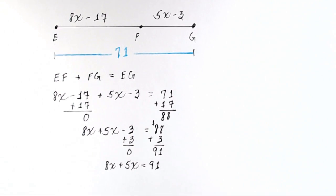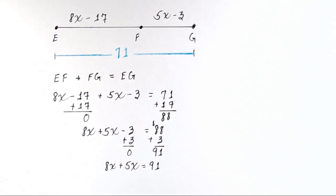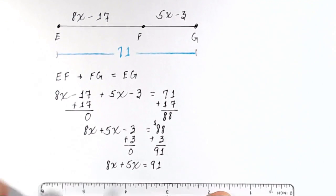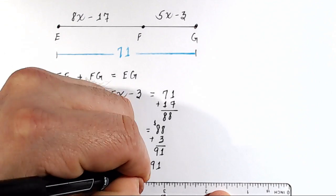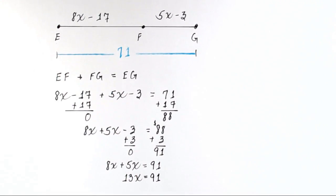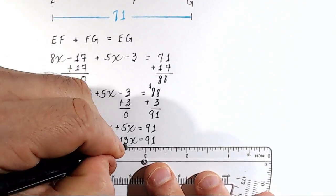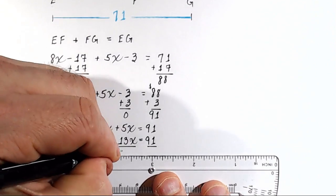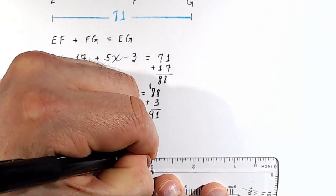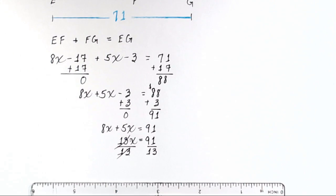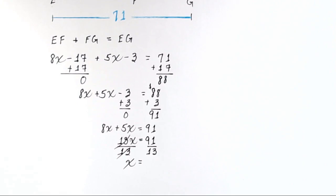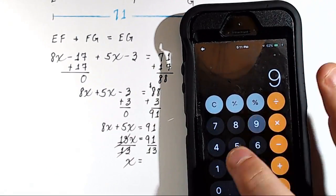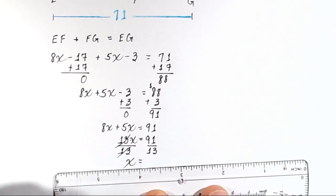Now it's time to combine like terms. We have two variables, both X, which means we can add their coefficients: 8 and 5. So 8 plus 5 is 13, giving us 13X equals 91. Now we need to get X by itself — X is currently being multiplied by 13, so we divide both sides by 13. On the left, 13 divided by 13 is 1, so we have X by itself. 91 divided by 13 is 7, so X equals 7.